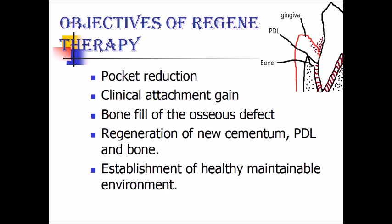The objectives of periodontal regenerative therapy are: reduction of the pocket formed because of periodontitis, clinical attachment gain — attachment of the exposed root with periodontal ligament fibers — bone fill of the osseous defect, new cementum formation, new bone formation, and periodontal ligament structure. This means establishment of a healthy, maintainable environment.